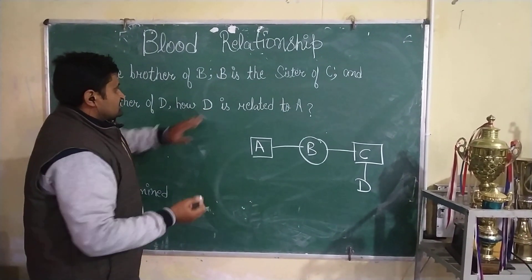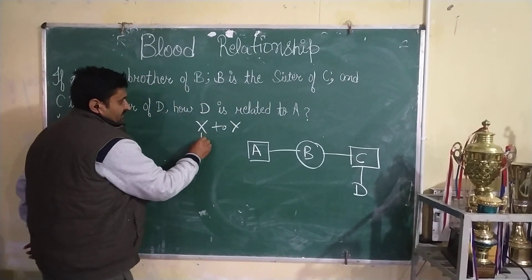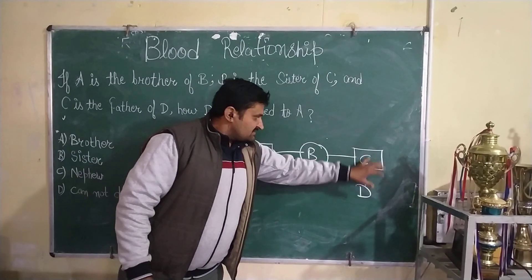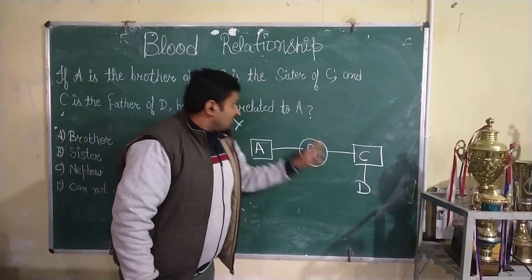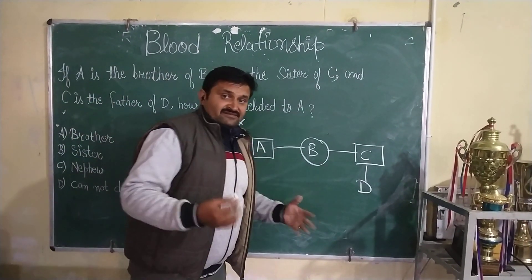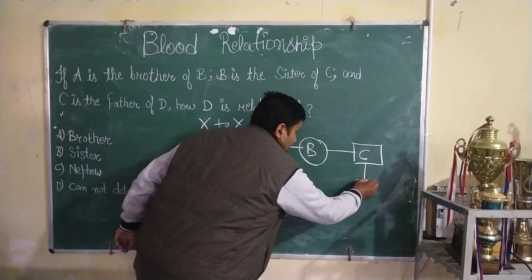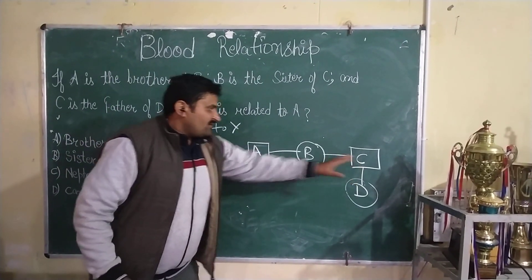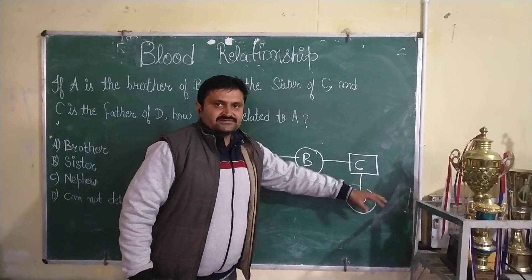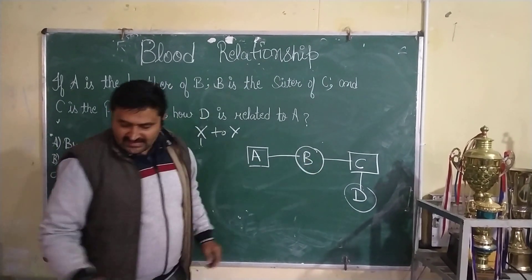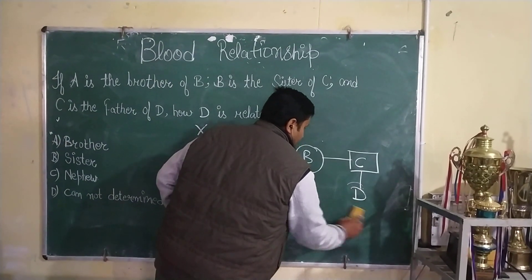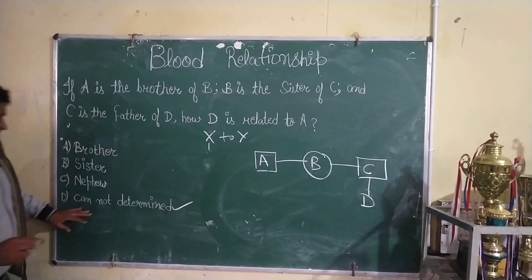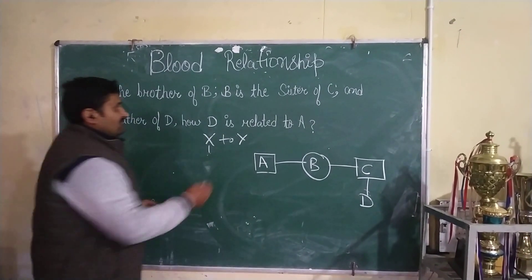So what do we do? We look at the relationship X related to Y. D is the child of C. And since B is the sister of C, we need to determine the gender of D and how D connects to A. So D is the child of C, and C is related to B, and we need to find how A is related to D.